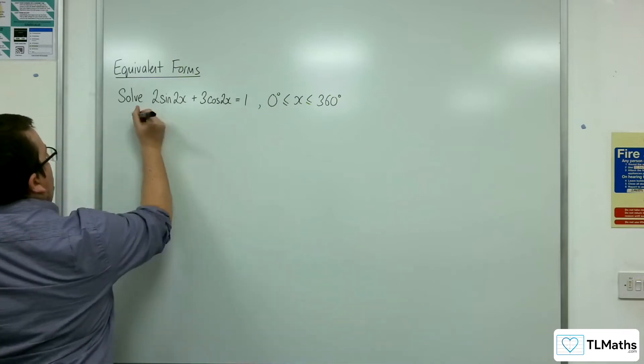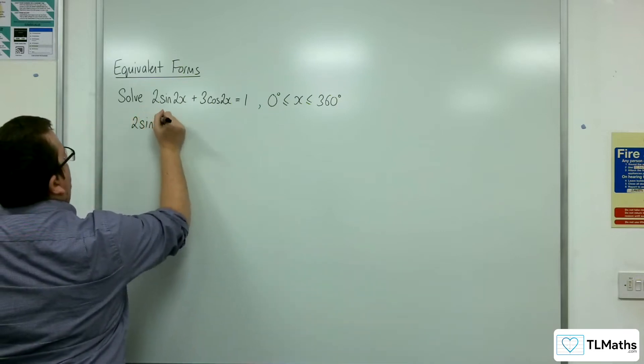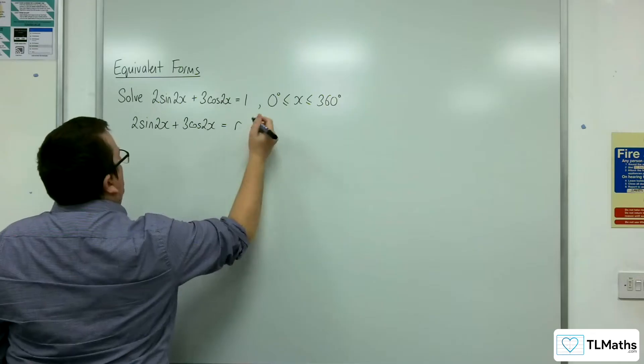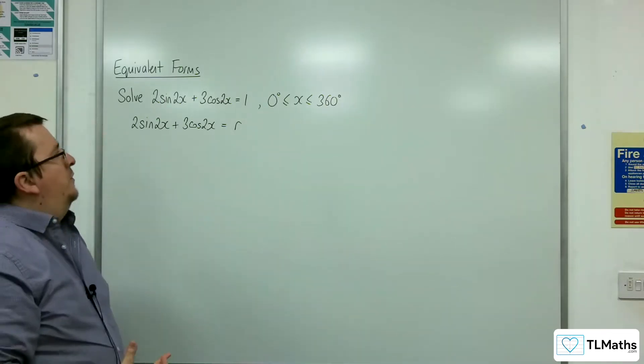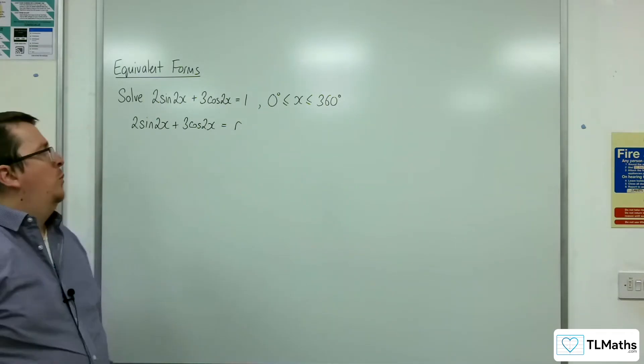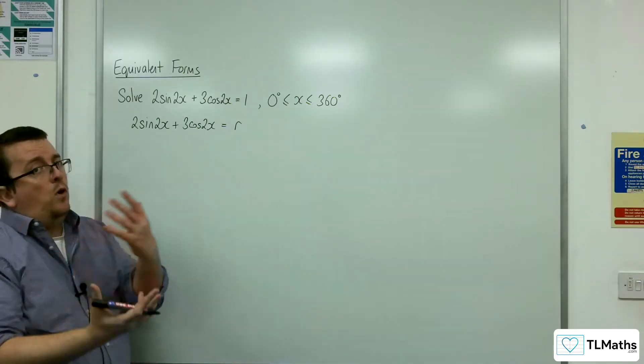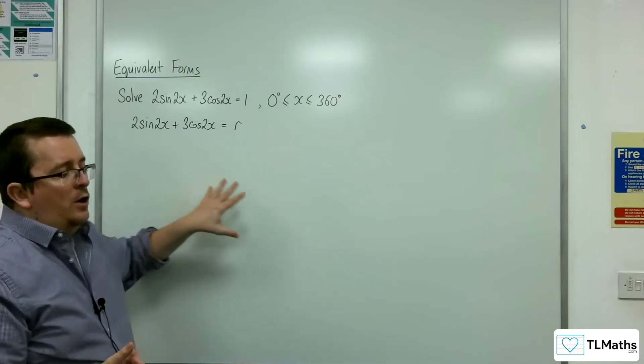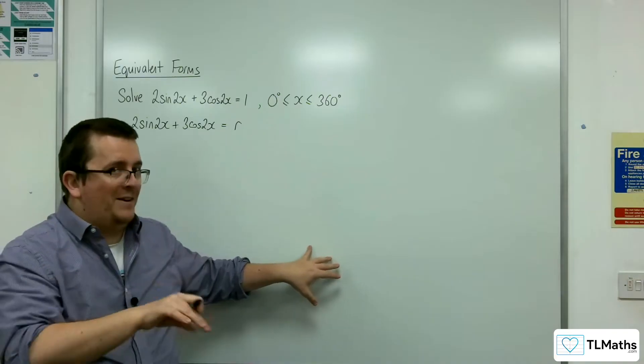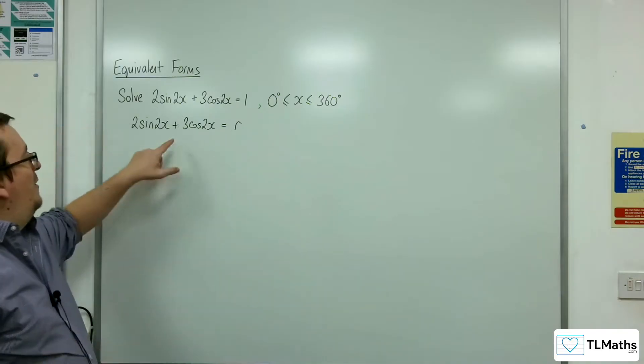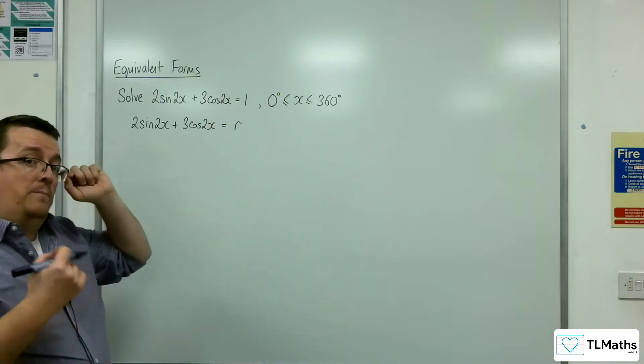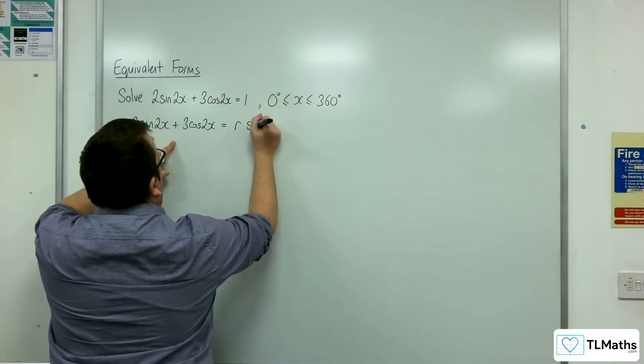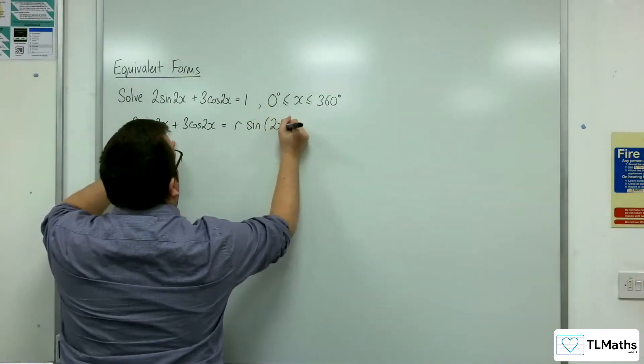I want to be able to write 2sin2x + 3cos2x as r times sine of 2x plus alpha, or r times cosine of 2x minus alpha. The reason I'm looking for sine of 2x plus alpha or cosine of 2x minus alpha is because of this plus sign - both of those formats will give me the plus in the middle. So let's use sine of 2x plus alpha.